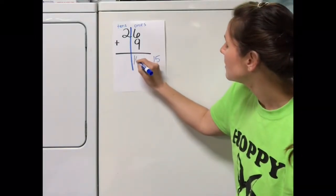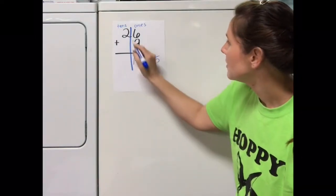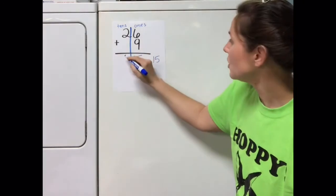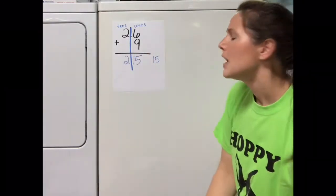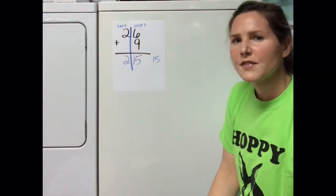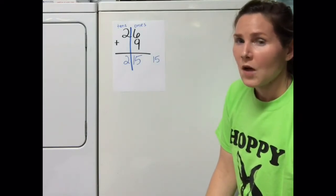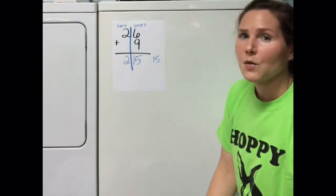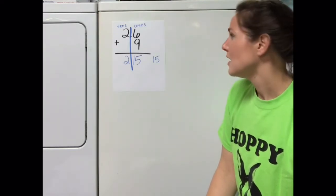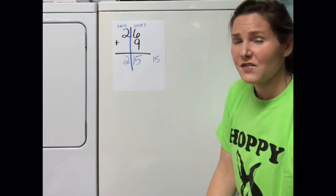Look what happens when I try it. 2 plus nothing is equal to 2. It looks like the answer is 215. I'm going to put a hundreds chart on the screen. I want you to start at the number 26 and I want you to move your finger forward nine times, and then you tell me if 26 plus 9 is 215.